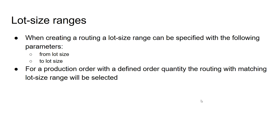To complete this video, one last topic is lot size ranges. When you create a routing, you can specify a lot size range. This means you can have several routings defined for different lot size ranges, representing different production processes depending on the lot size. For example, a small lot size may use a different production process than a large one. When a production order is released, the system will automatically pair it with the routing that falls within the correct lot size range.